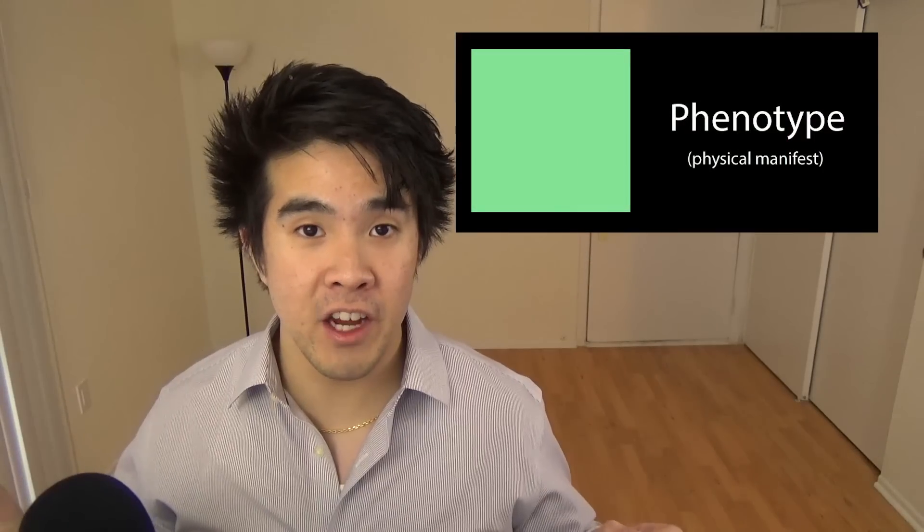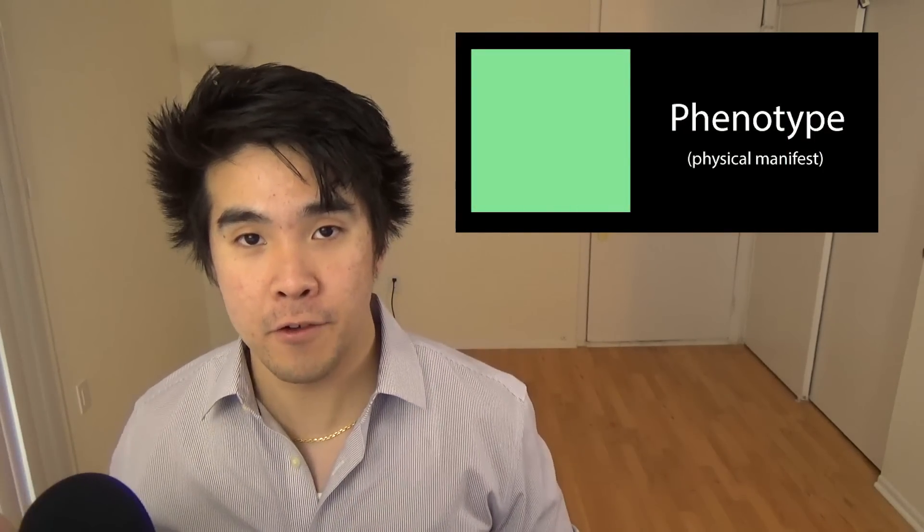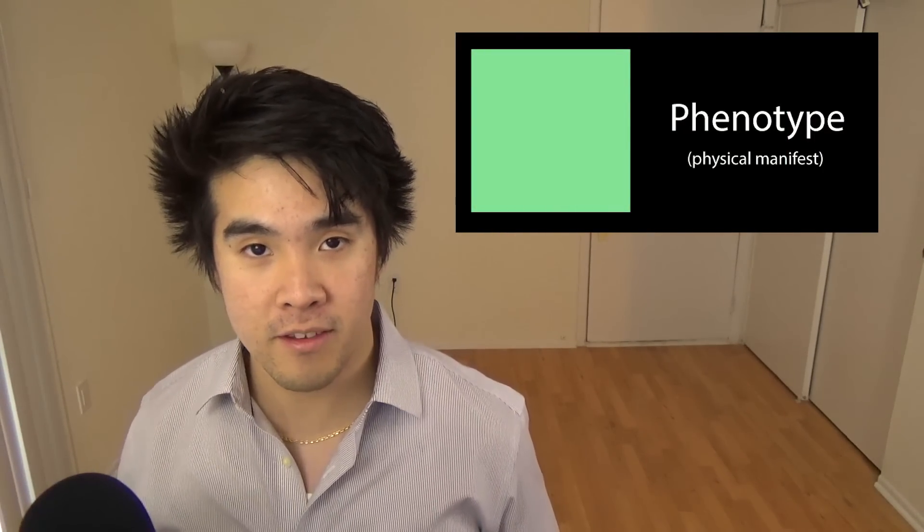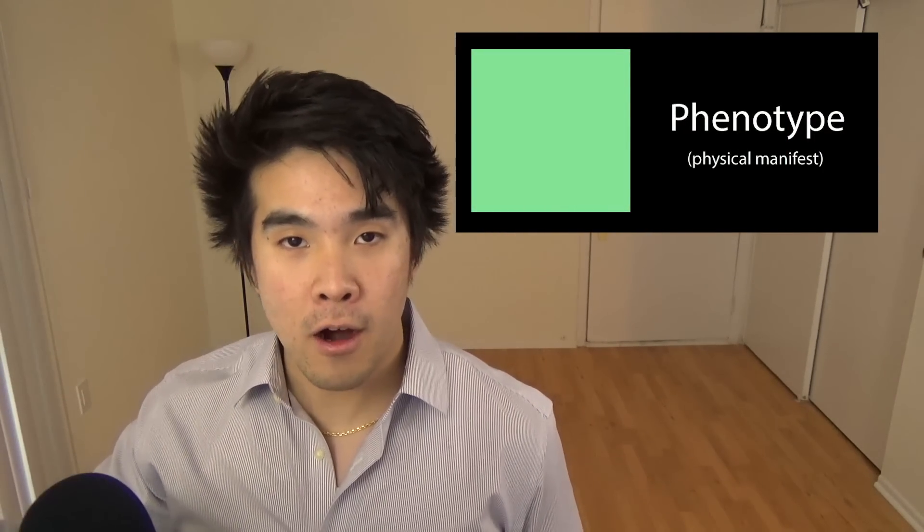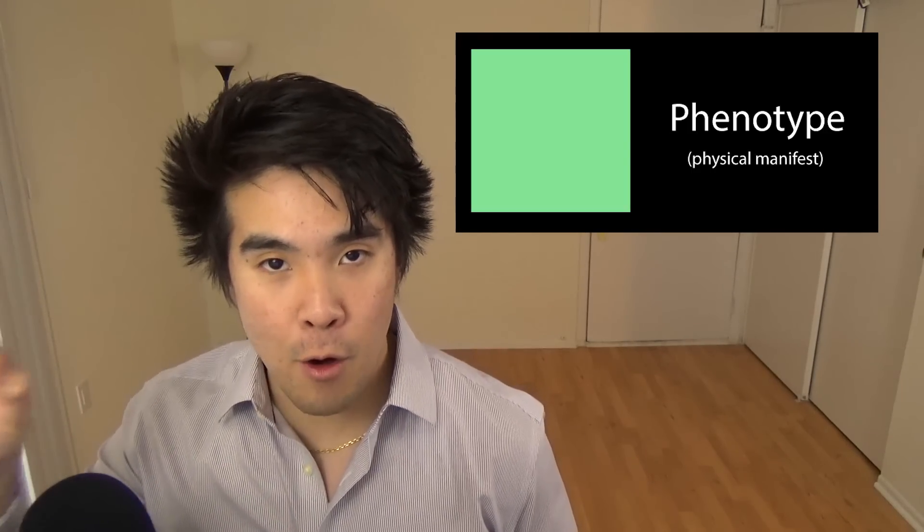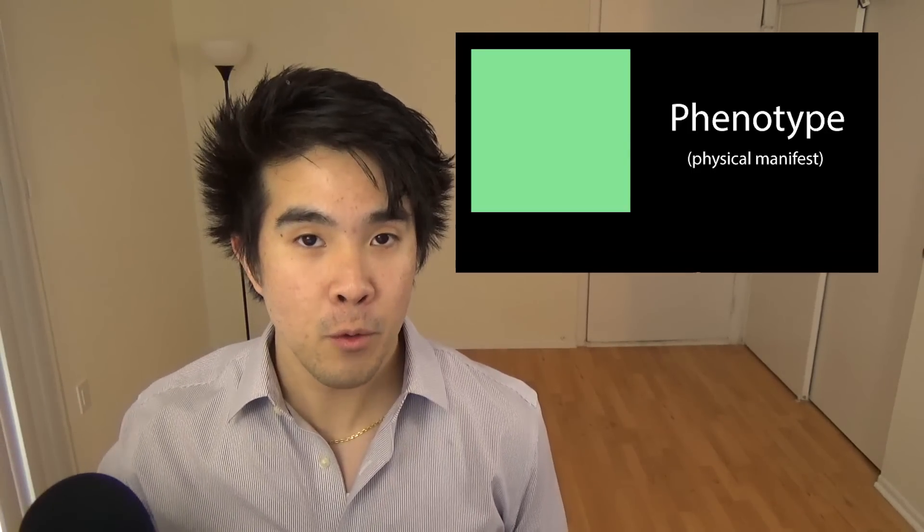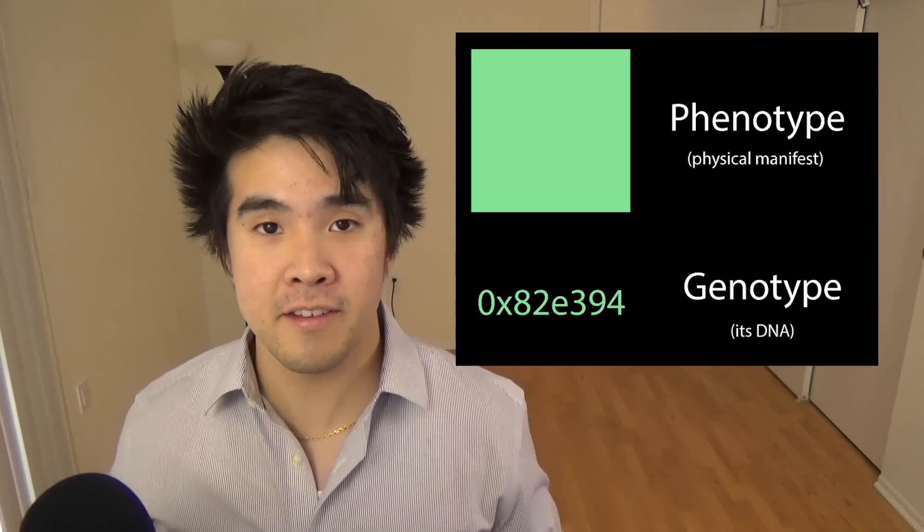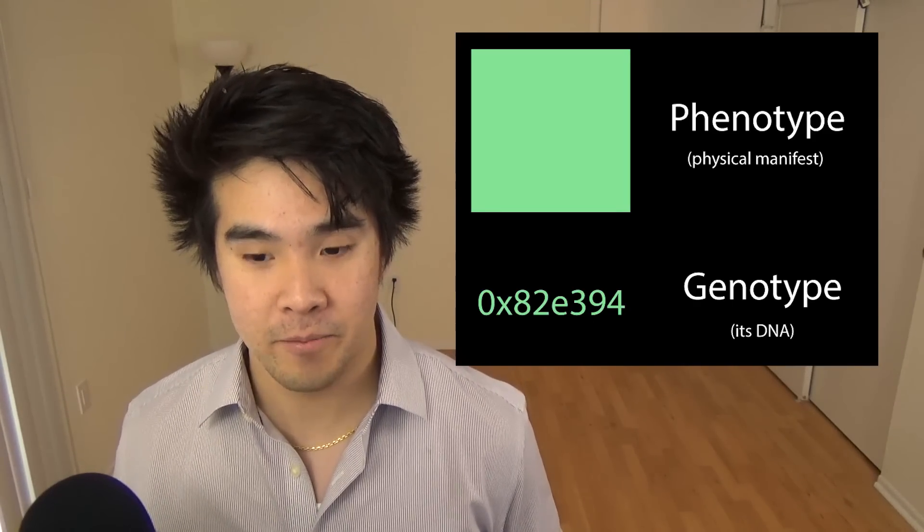So our first step in creating the algorithm is to define the problem. For us, we want the computer to show a particular color. And for our case, we're going to use this particular shade of green. Now the physical manifestation of the object is this shade of green that we can recognize as humans. But the underlying architecture that dictates how this is green is going to be within its hexadecimal value. We can call this value its DNA.